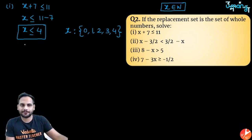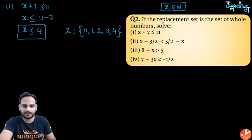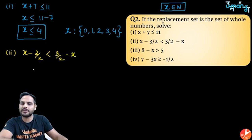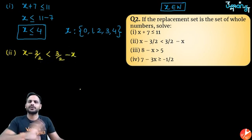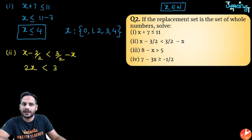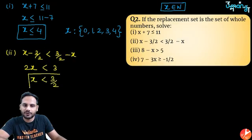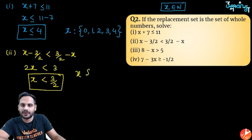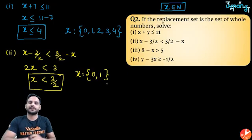Part (b): x - 3/2 < 3/2 - x. Shift -x to the left and -3/2 to the right: 2x < 3. Dividing by 2 (positive), no sign change: x < 3/2 = 1.5. Since x belongs to whole numbers, x can be 0 or 1 only.